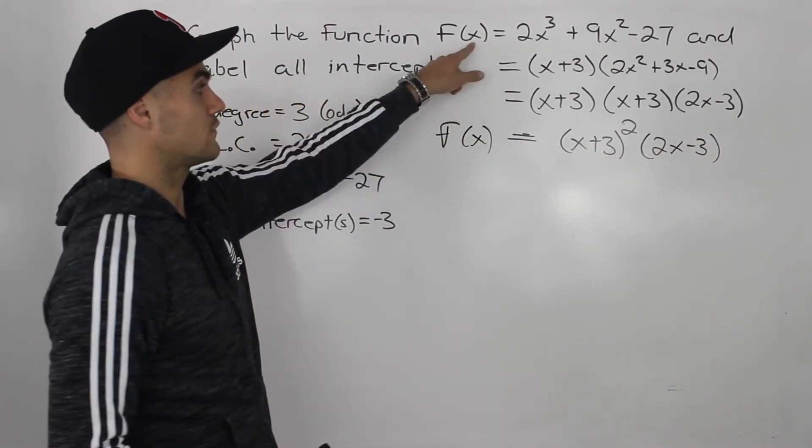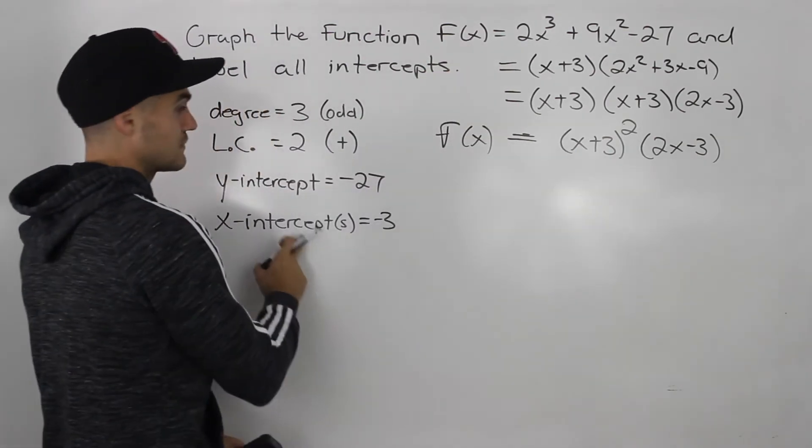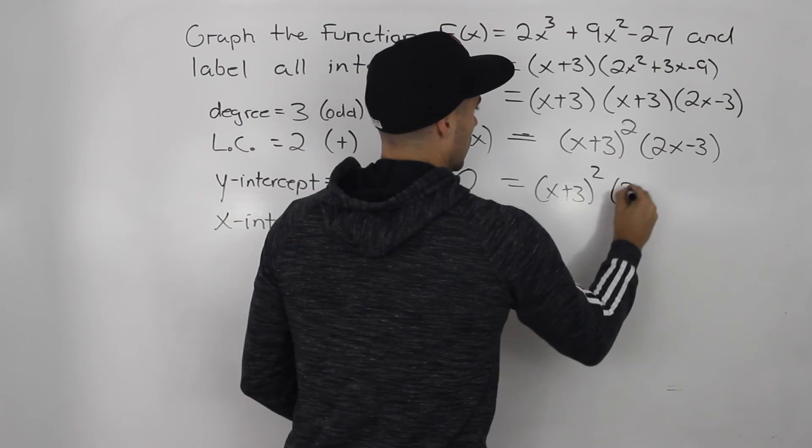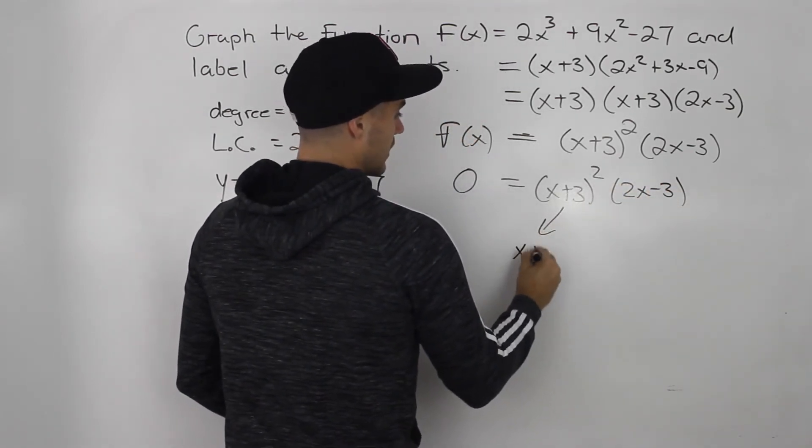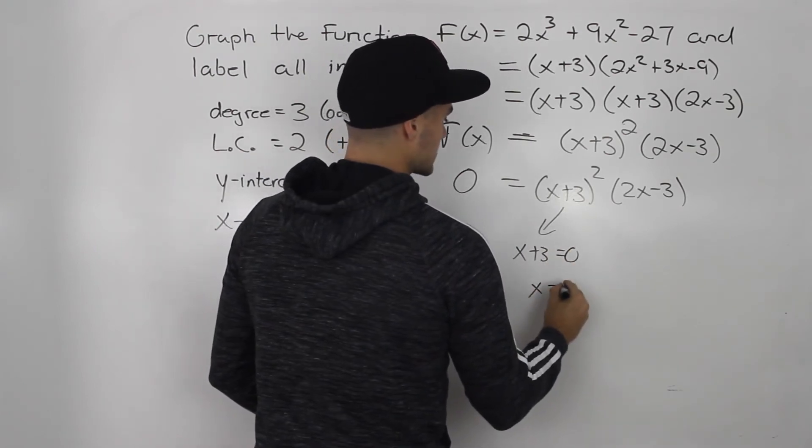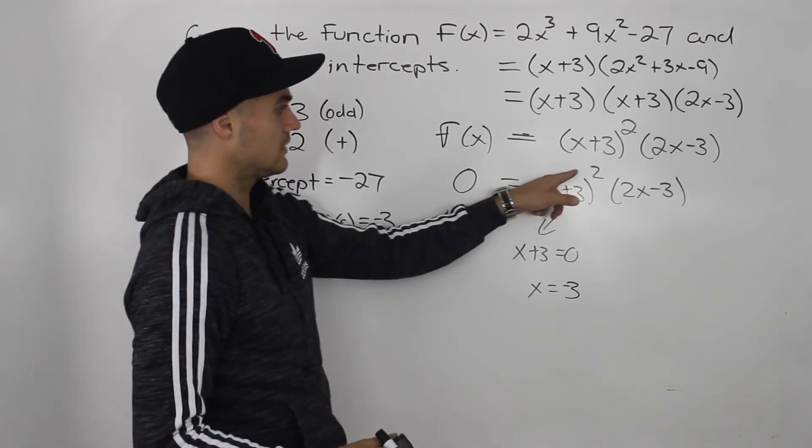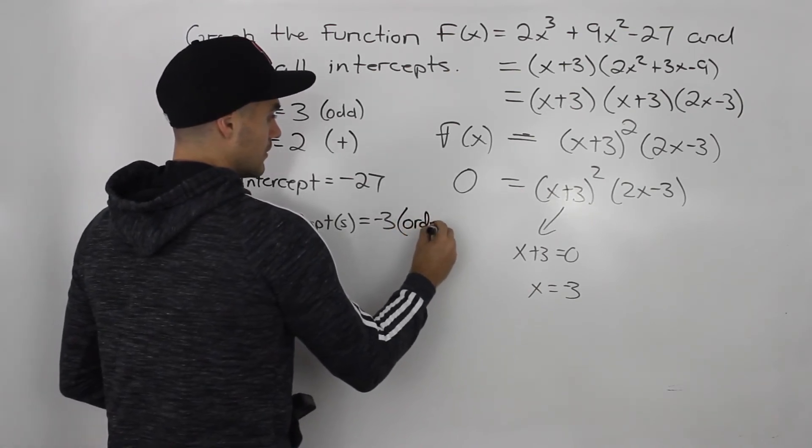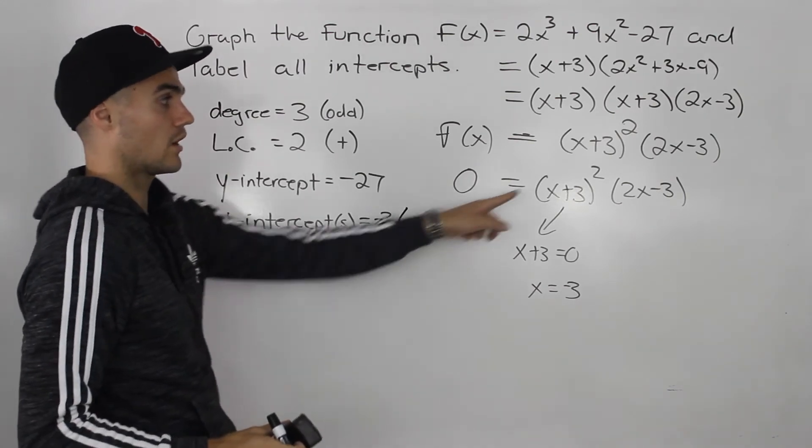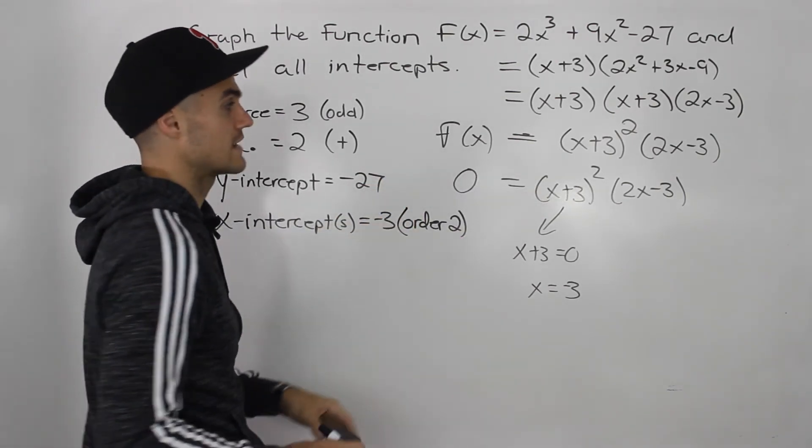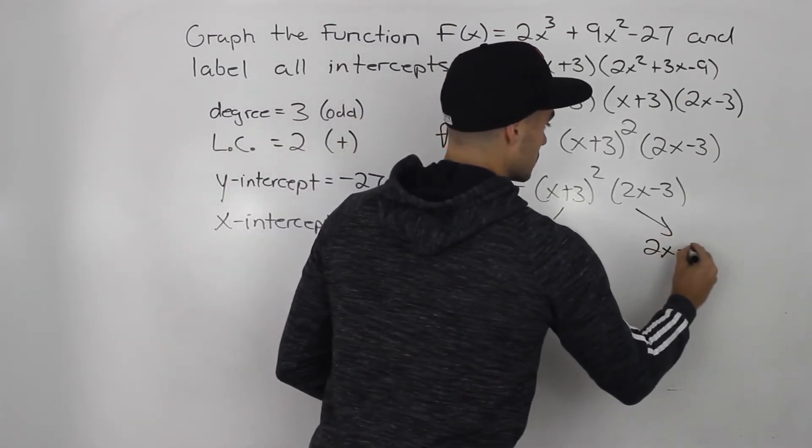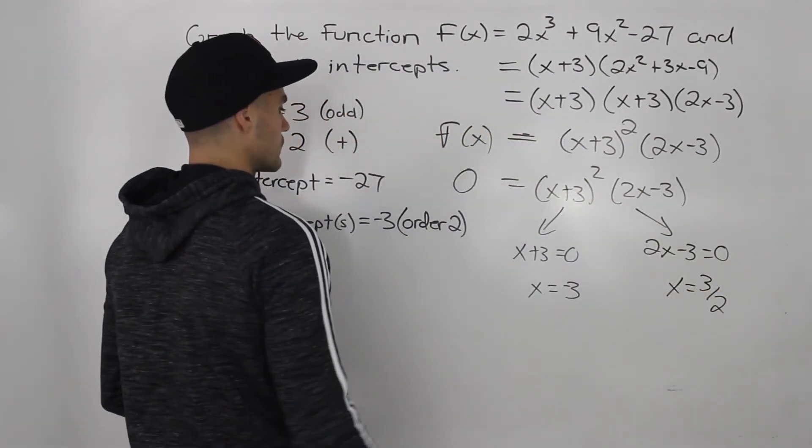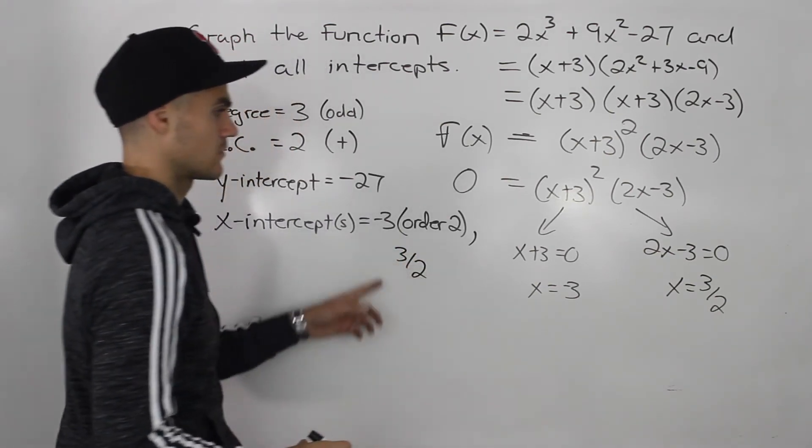So now we took our function and we fully factored it. And now it's easy to find the rest of the x-intercepts. We just let this equal to 0. Well, this bracket we already took care of, x + 3. When does it equal 0? When x is equal to negative 3. But notice that here, this negative 3 has an order of 2. We didn't know that before. We just knew that negative 3 was an x-intercept. But now we know that this negative 3 x-intercept has an order of 2. So on the graph, it's going to bounce off that x-intercept. And then the other x-intercept, 2x - 3, when does it equal 0? When x is equal to 3/2, or 1.5.